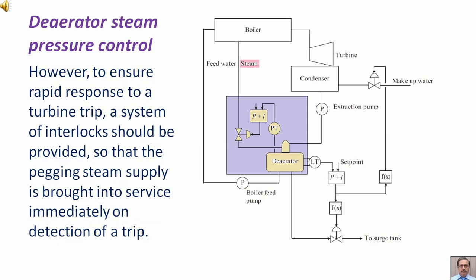However, to ensure rapid response to a turbine trip, a system of interlocks should be provided so that the pegging steam supply is brought into service immediately on detection of a trip.